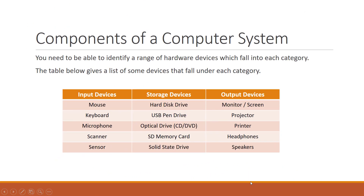You need to be able to identify a range of hardware devices which fall into the categories of input, storage and output devices. The most common input devices include the mouse and keyboard, microphones, scanners and sensors. The most common storage devices include the hard disk drive, USB pen drives or memory sticks, optical drives including CD, DVD and Blu-ray drives, memory cards and solid state drives.